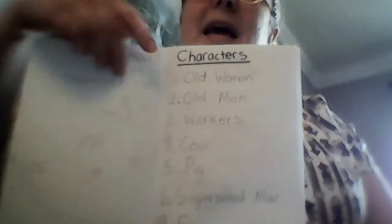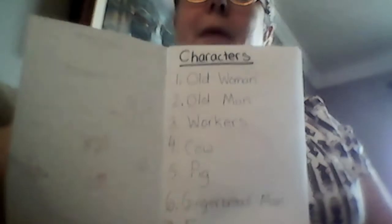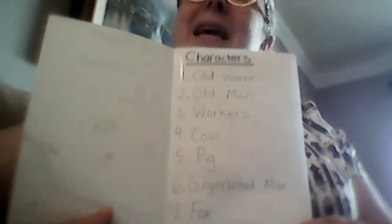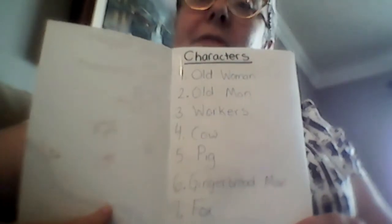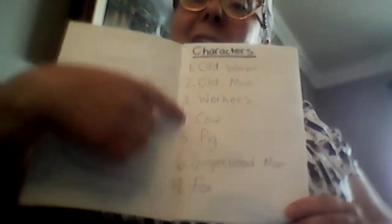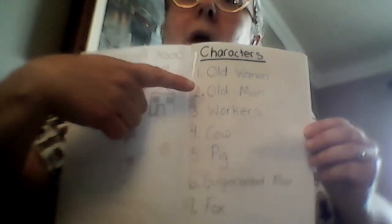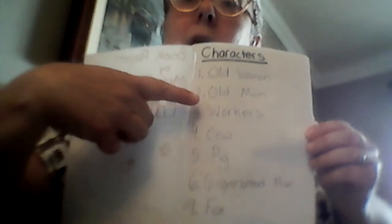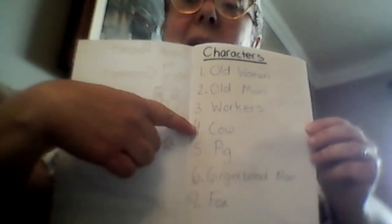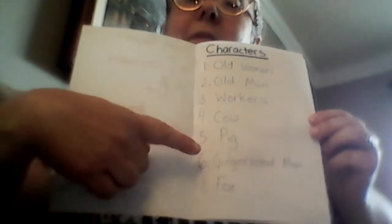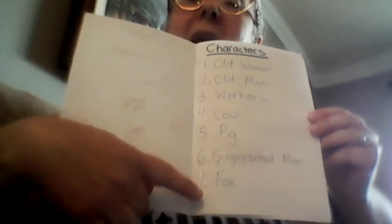Now we go ahead and open up our booklet to see the second page. On the second page, we say 'Characters' at the top. Then I want all of you to make a list of the characters in the story. I did that for The Gingerbread Man — we have the old woman, the old man, the workers, the cow, the pig, the gingerbread man, and the fox.